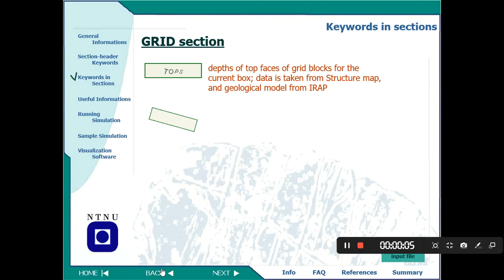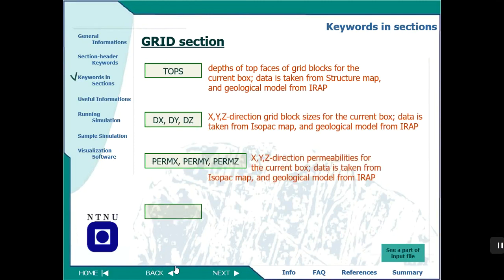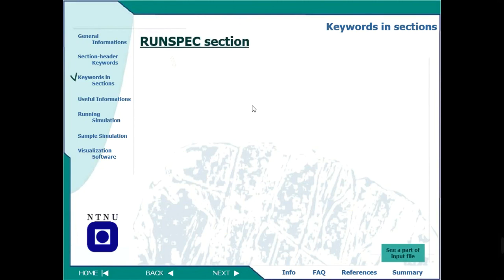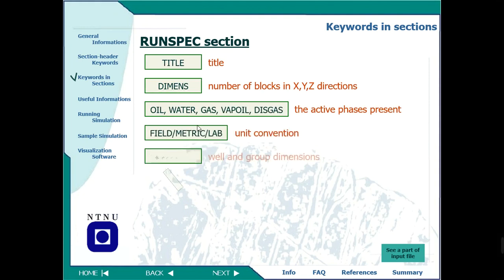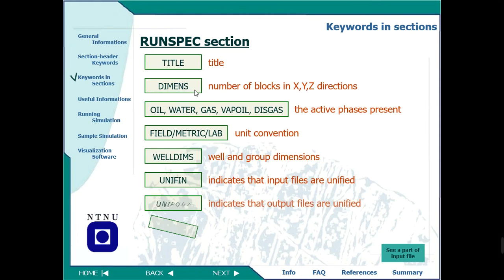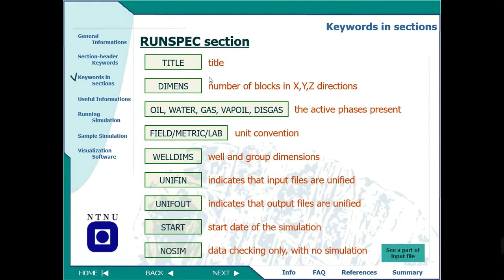Welcome back to the class of reservoir simulation. We are discussing the data file for Eclipse. In the previous section we talked about the introduction, title, and the RUNSPEC section. The most important parts of RUNSPEC are: the title, the number of blocks in X, Y, and Z direction, the phases since we are dealing with a black oil model, units, how many wells you are going to have, and the start date.